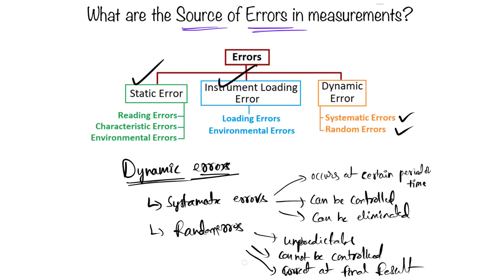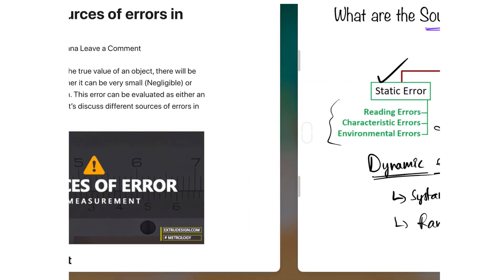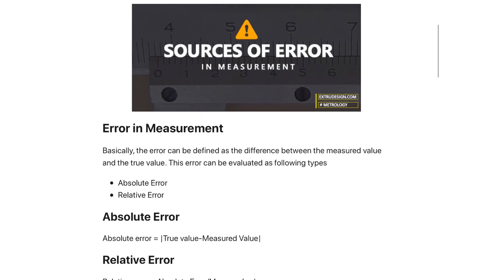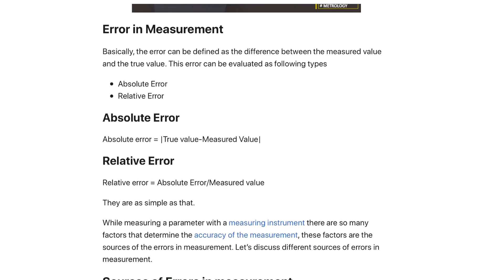To summarize, the different sources of errors in measurement are: static error (with three sub-types), instrument loading error (with two sub-types), and dynamic errors (with two sub-types). An article on this topic is available — the link is in the description. Hope you like this video; please subscribe and press the bell icon to get updates when we post new videos.